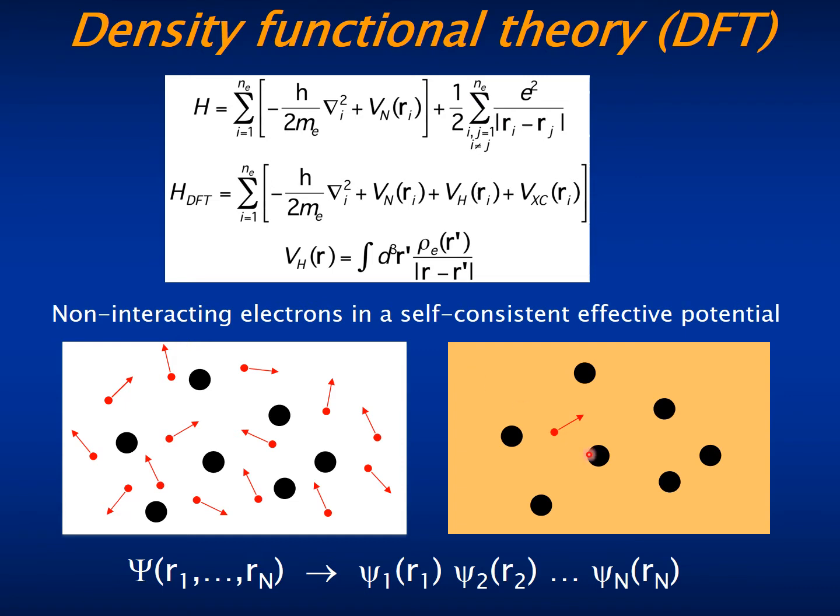What this allows is to decouple the motions of the different particles and to replace the N-electron problem by a one-electron problem, which in turn allows to write the N-electron wavefunction by a product of one-electron wavefunctions.